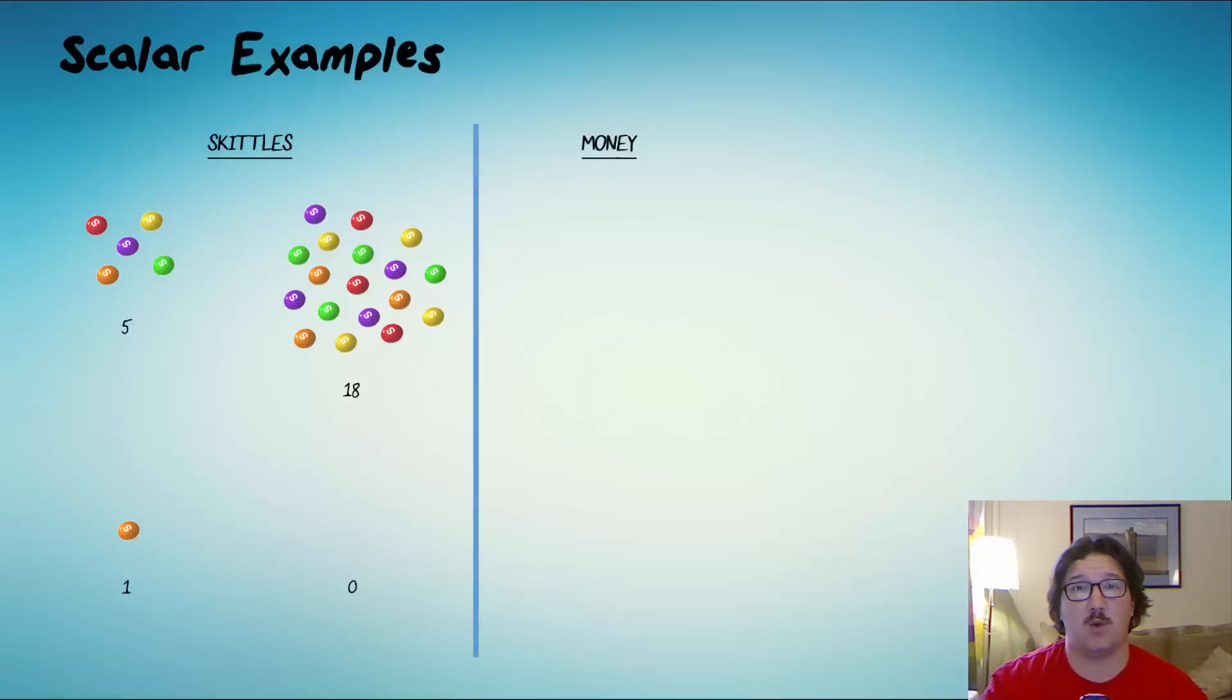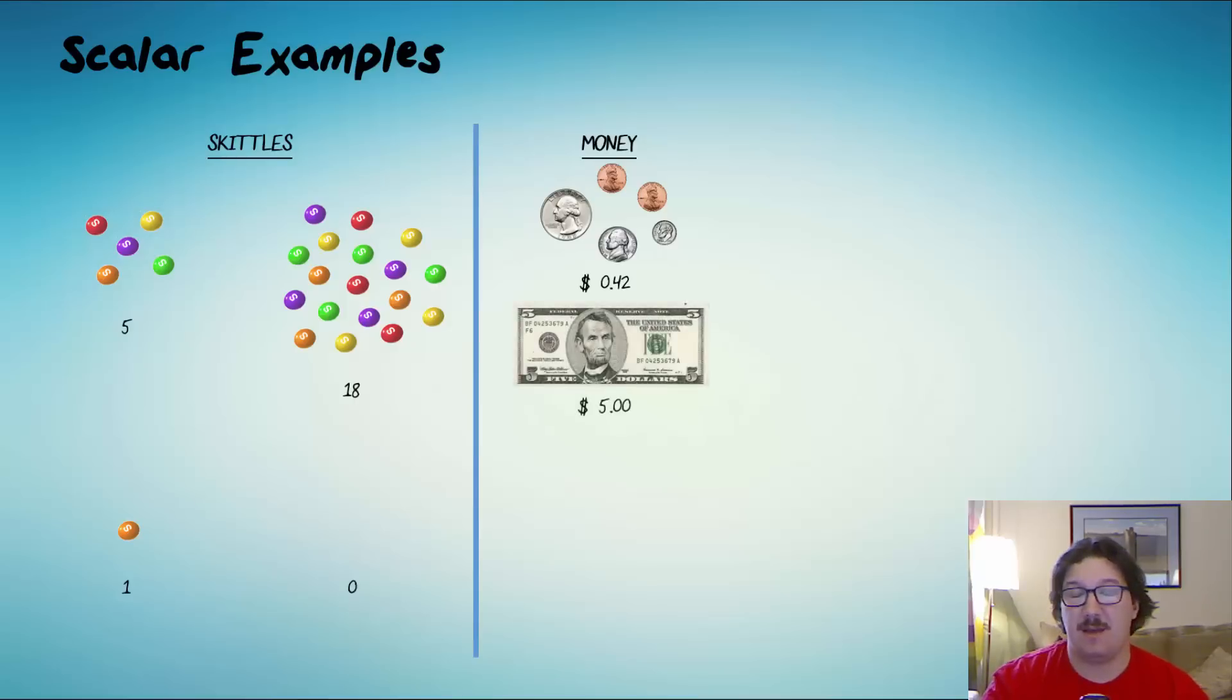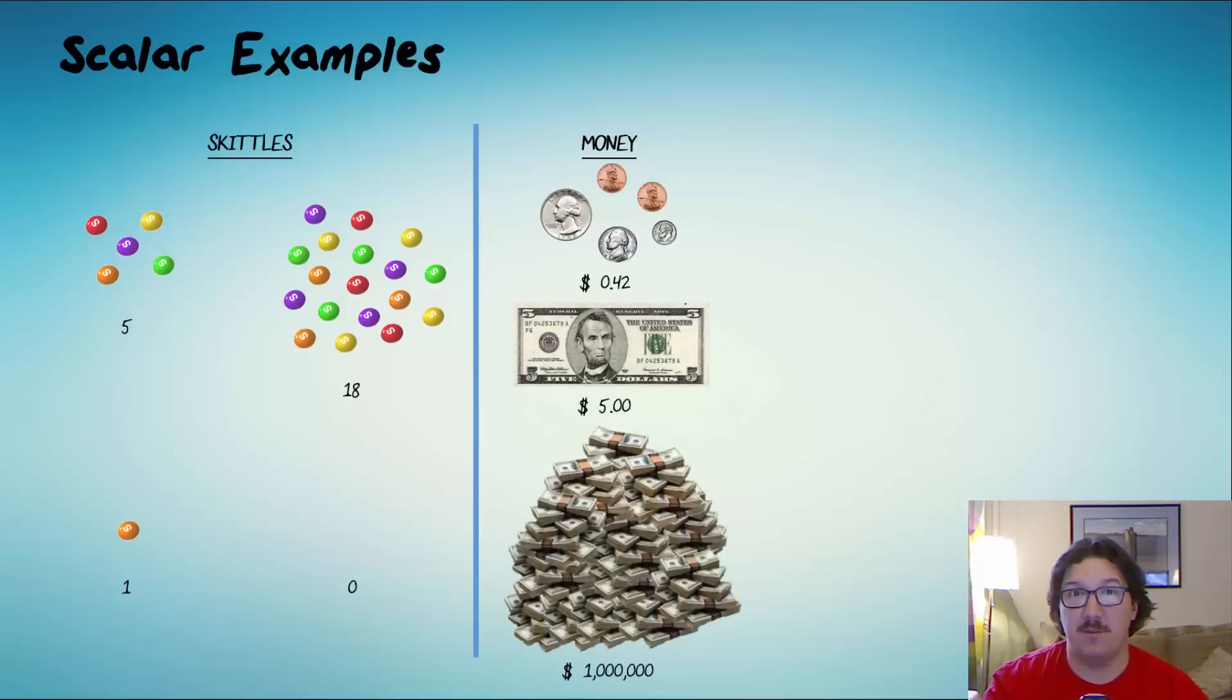Another classic example of a scalar would be money. In your pocket, maybe you have 42 cents. Maybe you have five dollars. Maybe someday you'll have a million dollars. I guess not in your pocket, but you could have a million dollars. And the amount of money that you have would be a scalar quantity.